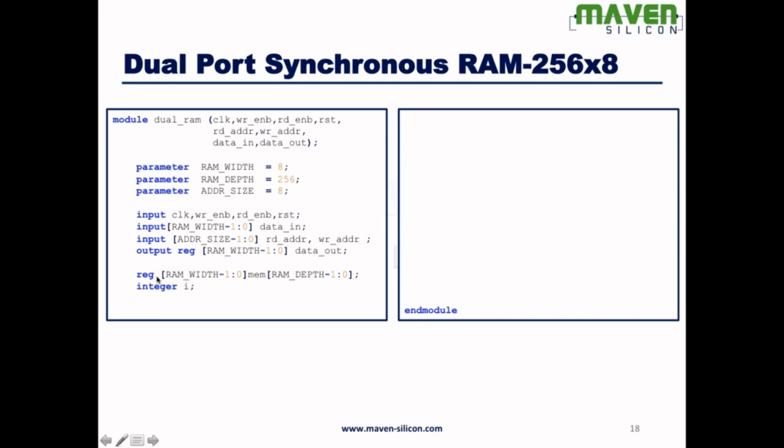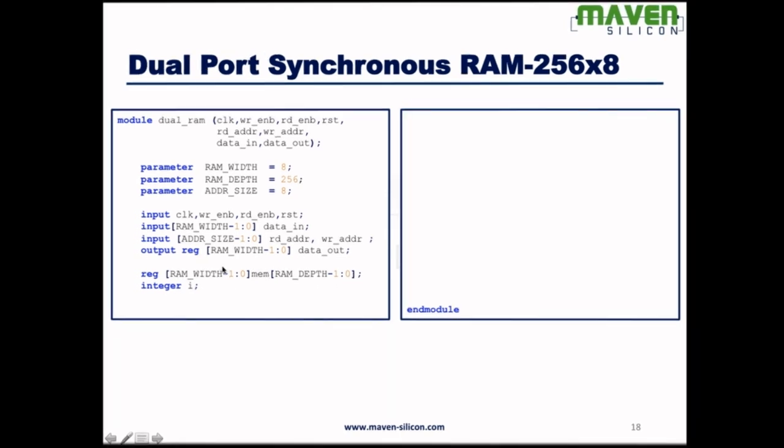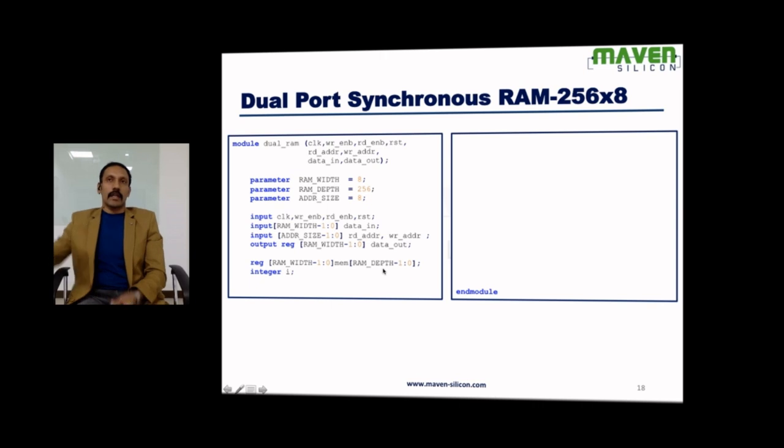And to realize memory, I have to define an array like this, as we already discussed: reg [width] memory [depth]. Here, what is width? 8. What is depth? 256. There are 256 elements and each element is 8 bits. This is how this particular array will be inferred. This is the main component.